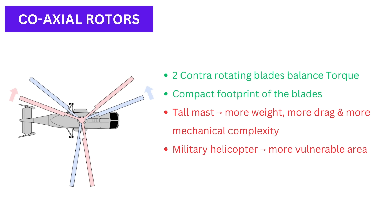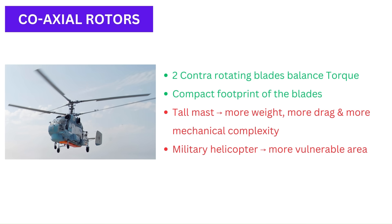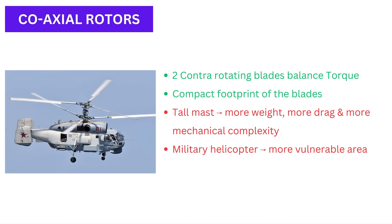Another advantage is the compact footprint of the coaxial concept. The mast is the vertical post on which the rotor is mounted. For this type, the mast needs to be tall enough to provide ample separation between the two rotors, which adds weight and drag, and also adds mechanical complexity. The pilot's control inputs must somehow be passed through the plane of the lower rotor to reach the upper rotor, which is rotating in the opposite direction. Moreover, for a military helicopter, all this adds to the vulnerable area.